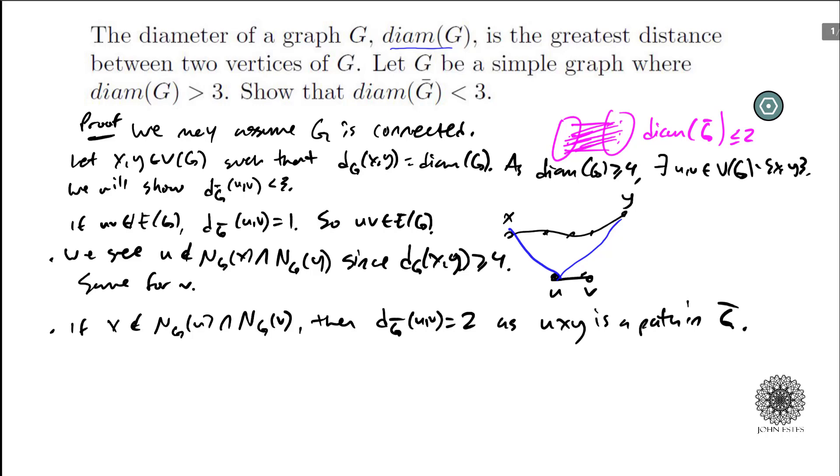Okay, so this would, this is what that situation looked like. If you had where these purple edges are not there, okay, then you can go from U to X to V in the complement and you have distance two.